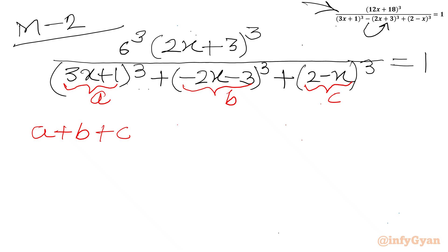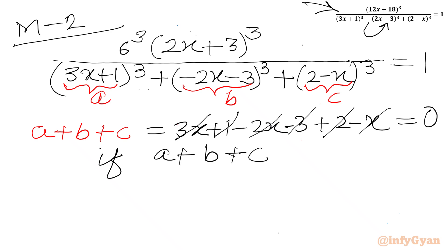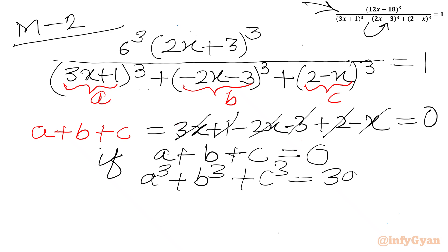So I will write here: (3x+1) minus (2x+3) plus (2-x). So: minus 2x minus x minus 3x cancels with plus 3x; and 1 plus 2 is 3 and minus 3 is also there, so this addition is coming out 0. Now we know that if a plus b plus c equals 0, then a cube plus b cube plus c cube equals 3 times abc.